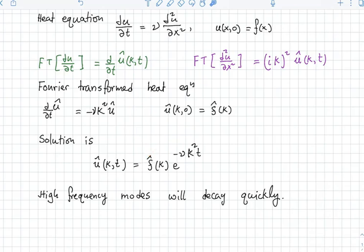So k is the frequency. This tells us that high-frequency modes will decay quickly. If I have taken the Fourier transform and solved the heat equation, what I can see is that for smaller values of k, the mode will be decaying slower.